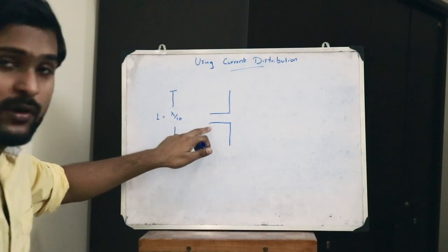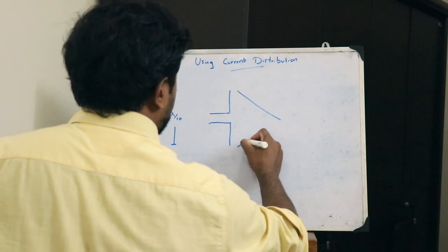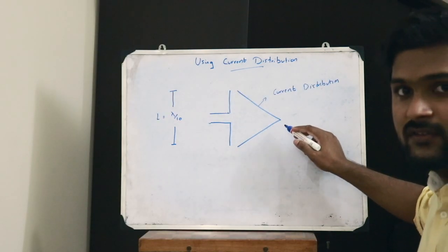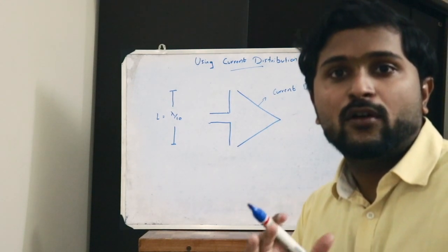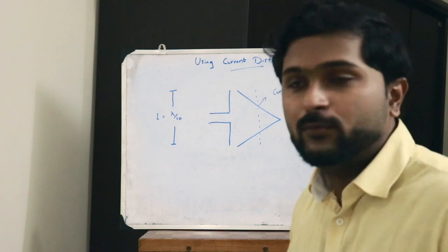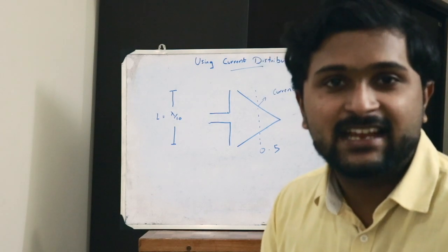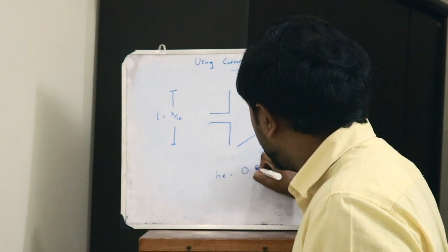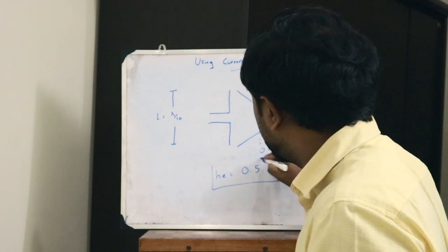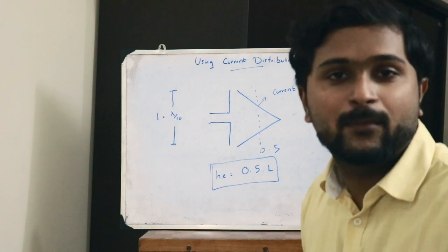Next, consider a dipole antenna with length L equal to lambda by 10. In this case, the current distribution takes a different form. When we take the average value of this current distribution, its value is found to be 0.5. Therefore, the effective height He is equal to 0.5 into L. This is the effective height of a dipole antenna with length L equal to lambda by 10.